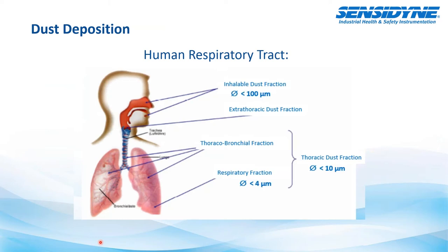This diagram shows different dust fractions. Inhalable dust is any particle less than 100 microns in size. The thoracic dust fraction is 10 microns and smaller — these particles can get into the upper respiratory tract, lower trachea, upper lungs, and bronchi. When we get to the respirable fraction — dust particles less than 4 microns — that can make it into the lower bronchial areas and alveolar sacs where oxygen transport occurs, causing difficulty breathing, shortness of breath, and potential suffocation.